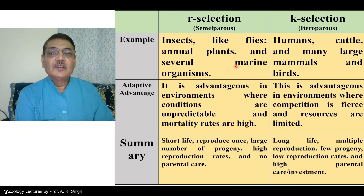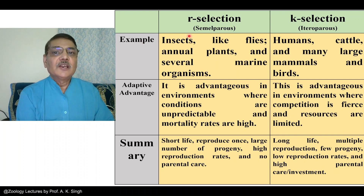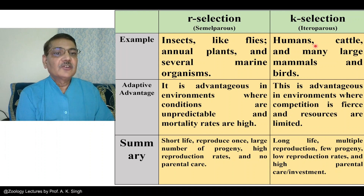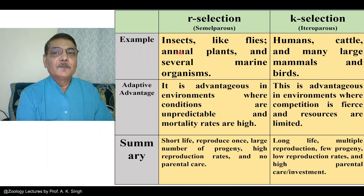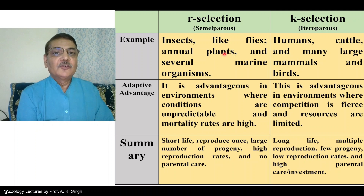There are certain examples to consider. Salmon fish is the example of R selection, whereas elephant is the example of K selection. Other animals include insects, which have very short lifetimes during which they produce a large number of progeny — like flies. Annual plants are another example, such as wheat plants grown in agricultural fields, which also produce a large number of seeds in a small period of time.